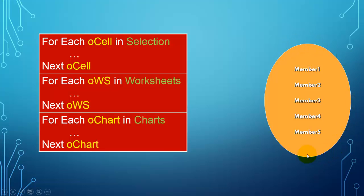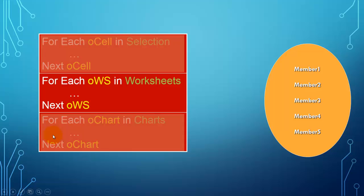Collections have members. Let's say we have five members in a certain collection. Let's just focus on this one. The collection of worksheets has, let's say, five members. And we use oWS as a variable to talk to all those members. oWS in the first loop will refer to the first member. Then it automatically refers to the second one.